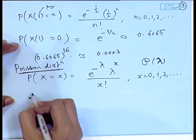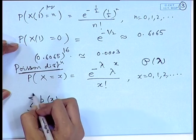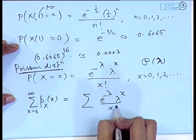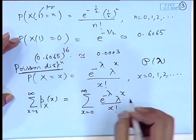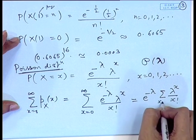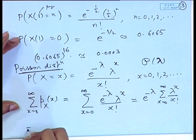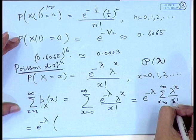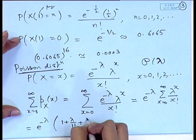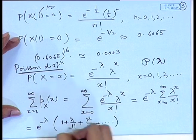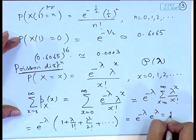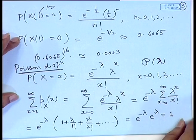Checking that this is a valid PMF: Σ P(x) from x=0 to ∞ equals e^(-λ) × Σ λ^x/x! = e^(-λ) × e^λ = 1, since the series Σ λ^x/x! is the expansion of e^λ. Therefore, this is a valid probability mass function.